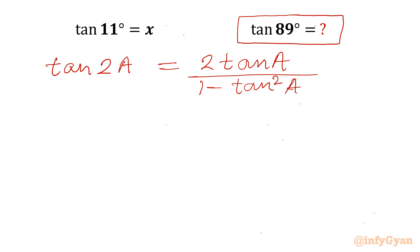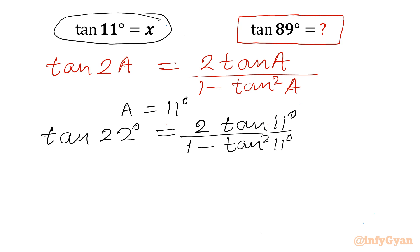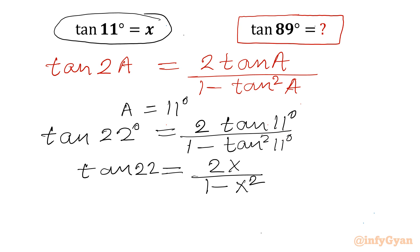Now I will apply a equal to 11 degrees. So the LHS will be tan 2 times 11 degrees, so tan 22 degrees. The RHS will become 2 times tan 11 degrees over 1 minus tan squared 11 degrees. Now tan 11 is x, so I can write 2x over 1 minus x squared. This is the value of tan 22 degrees.